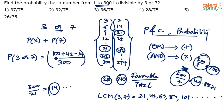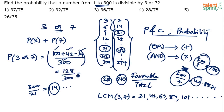So the number of favorable cases: multiples of 3 plus multiples of 7 minus common multiples of 3 and 7. Divide by the number of ways to choose the number — out of 300 numbers, we can choose in 300 ways. So: 100 plus 42 equals 142, minus 14 equals 128. Therefore, 128 divided by 300. Simplifying by dividing by 4, we get 32 by 75. That is the final answer — 32/75.